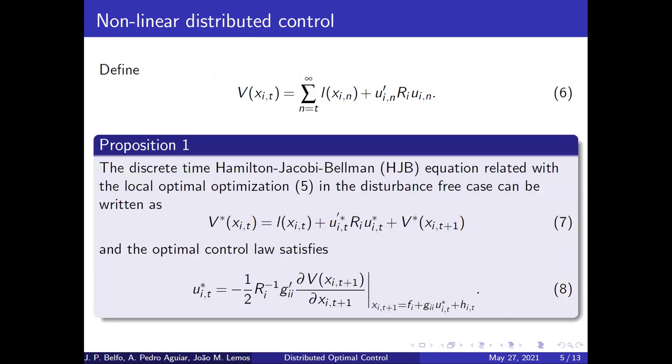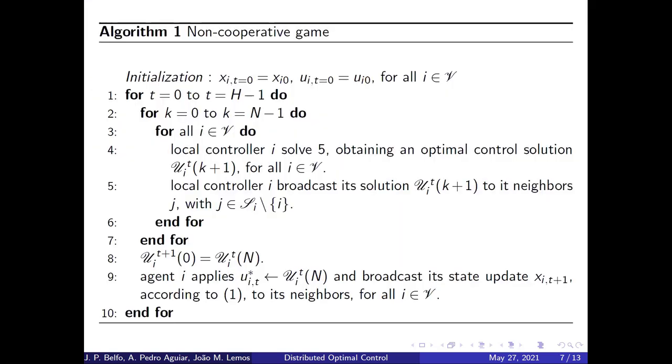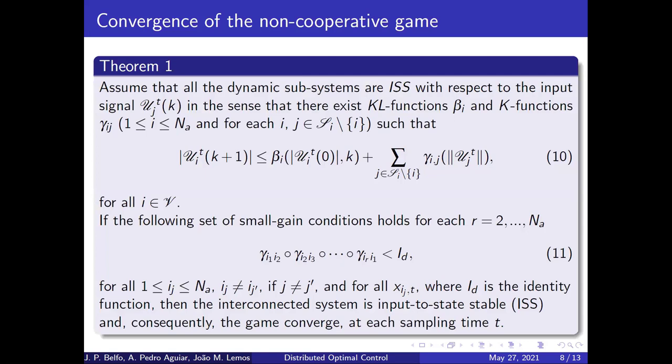The first step to define our controller is to define this V function, and then the HJB equation can be written, for which the optimal control law is given by equation 8, that depends on this generic function V. The function V must be such that these two conditions are satisfied, in particular, this inequality equation 9. The second step is to define the coordination method that here is assumed to be this non-cooperative game. In this game, each agent solves its local optimization problem, and exchanges the solution with its neighbors until the consensus is reached. The first contribution of the paper is theorem 1, that states conditions for which the proposed game converges, based on small gain conditions, as we can see here in equation 11.